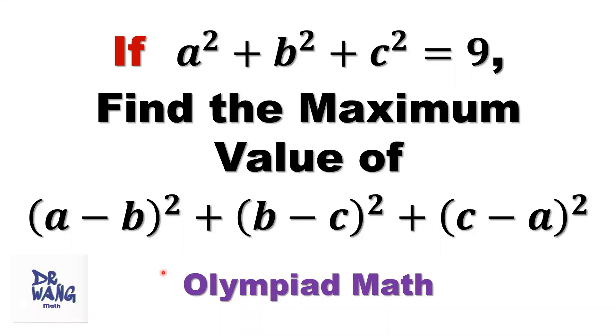Hello everyone, this is Dr. Wen. Here is the question: If a squared plus b squared plus c squared equals 9, we want to find the maximum value of (a minus b) squared plus (b minus c) squared plus (c minus a) squared.